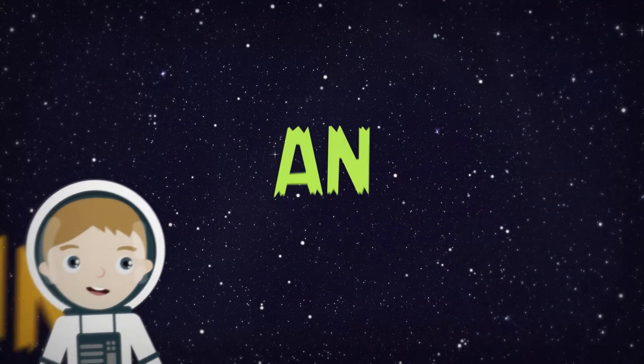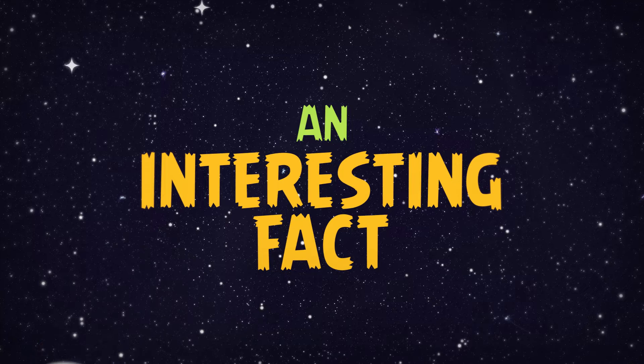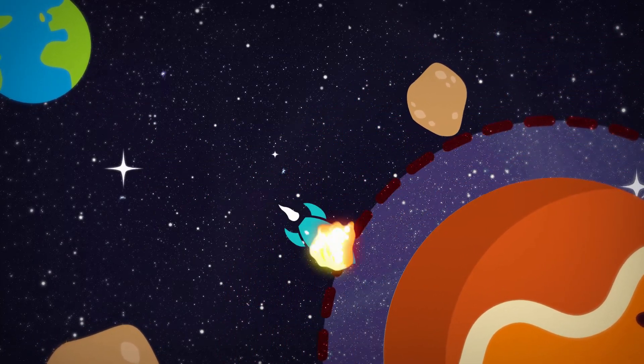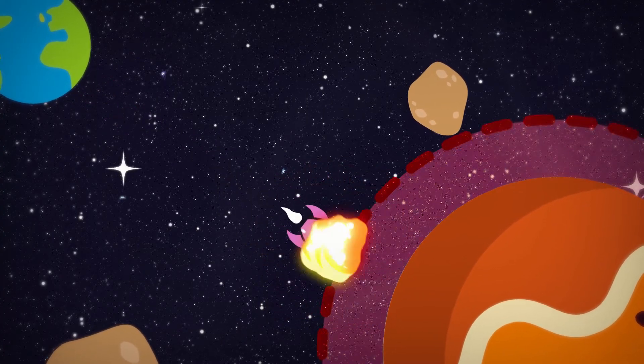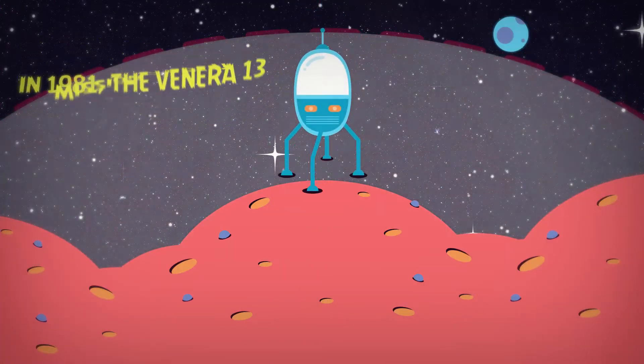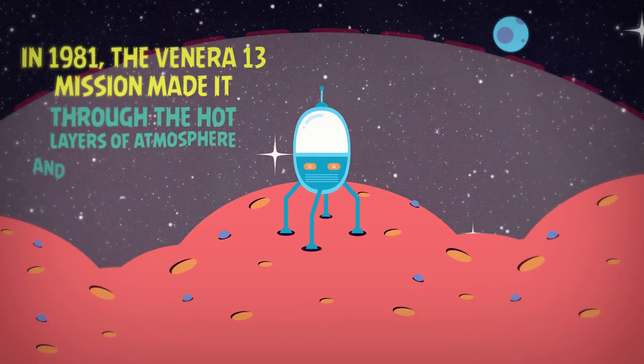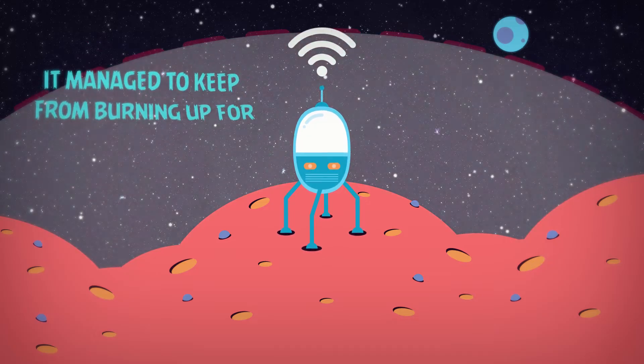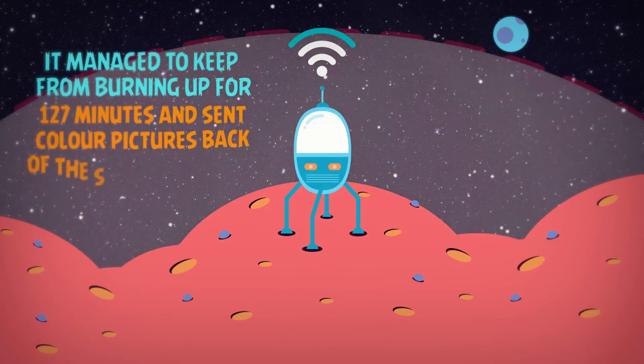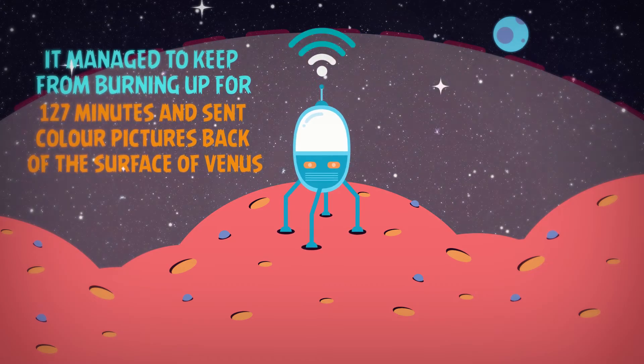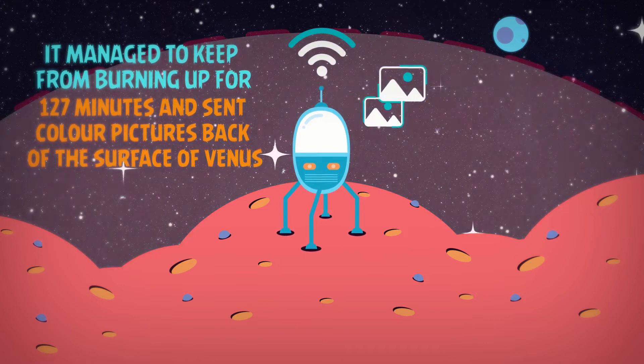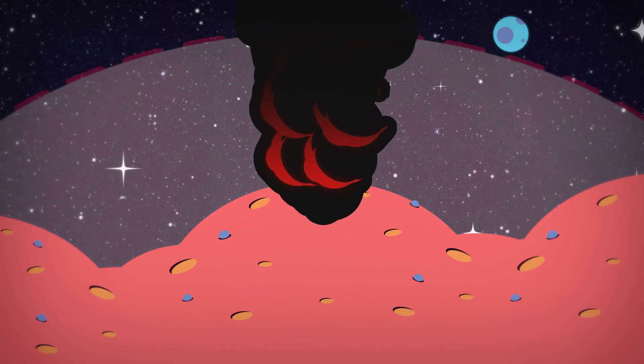An interesting fact is that it took many failed missions to actually land on Venus. But in 1981, the Venera 13 mission made it through the hot layers of the atmosphere and landed on its surface. It managed to keep from burning up for 127 minutes and sent color pictures back of the surface of Venus. Then the transmission stopped as the Venera 13 melted.